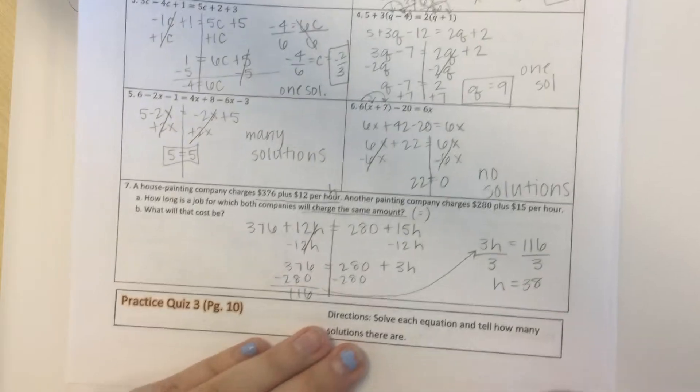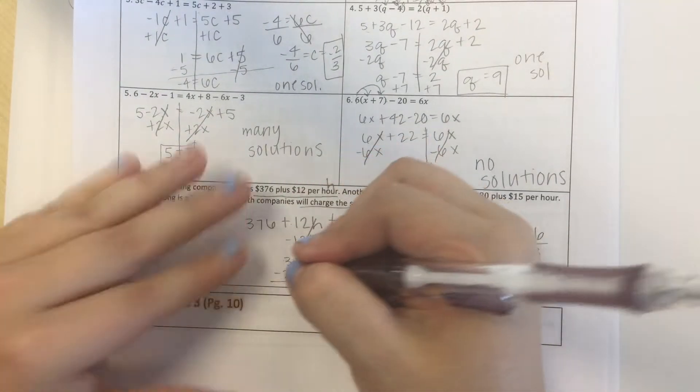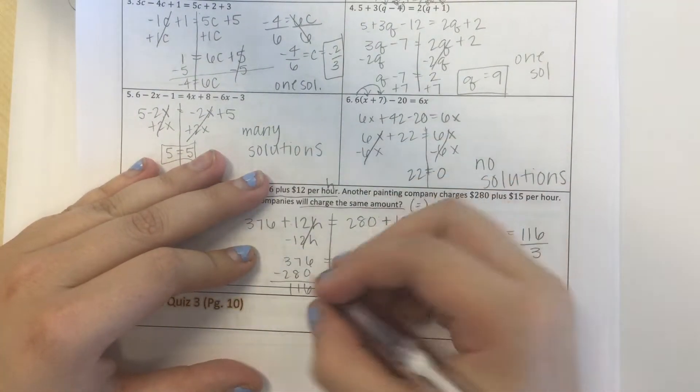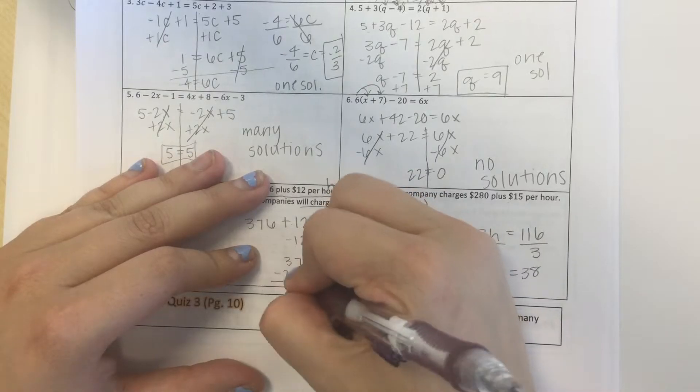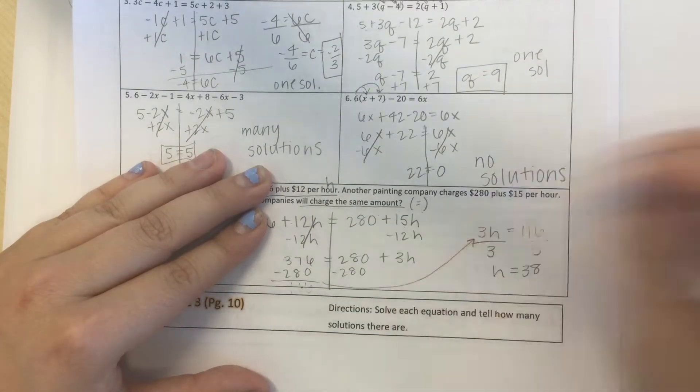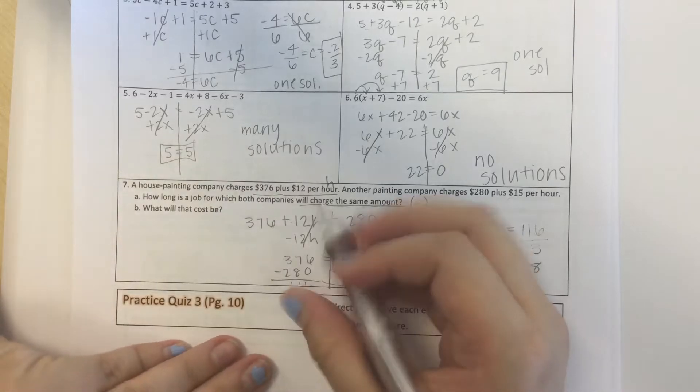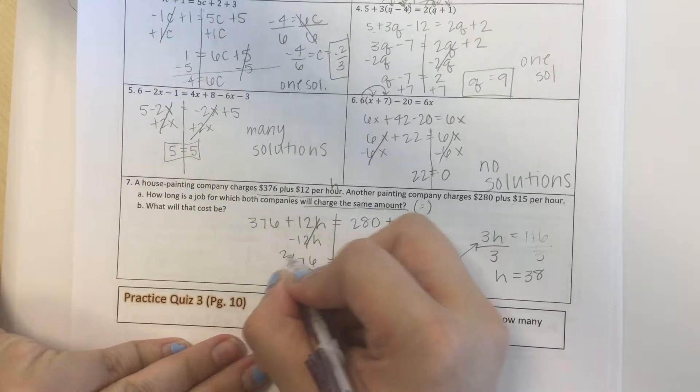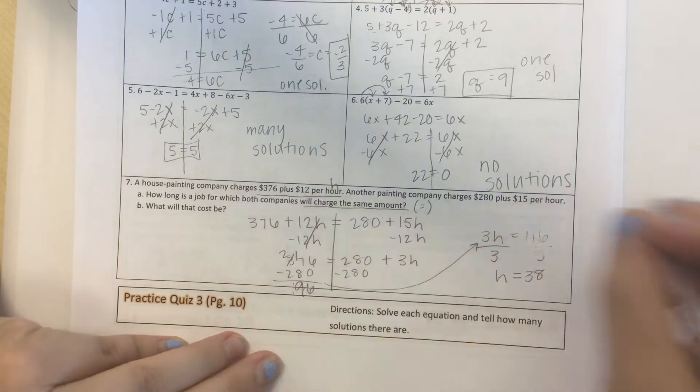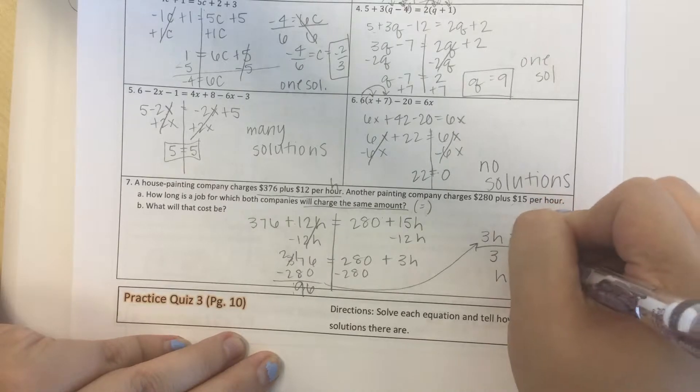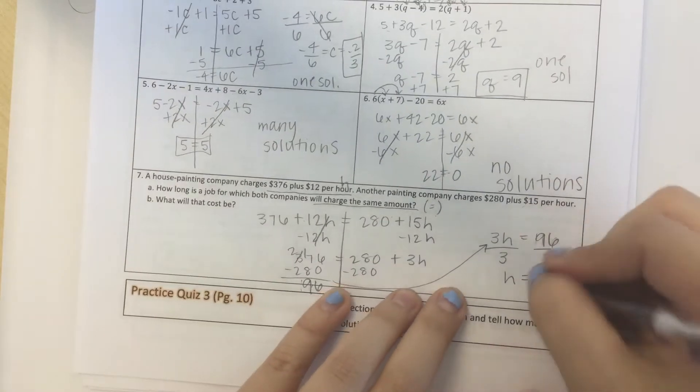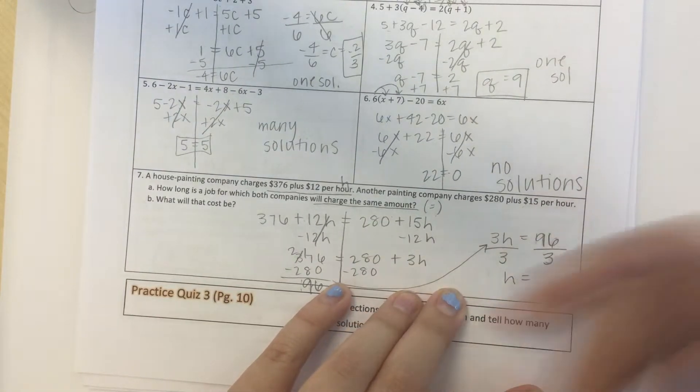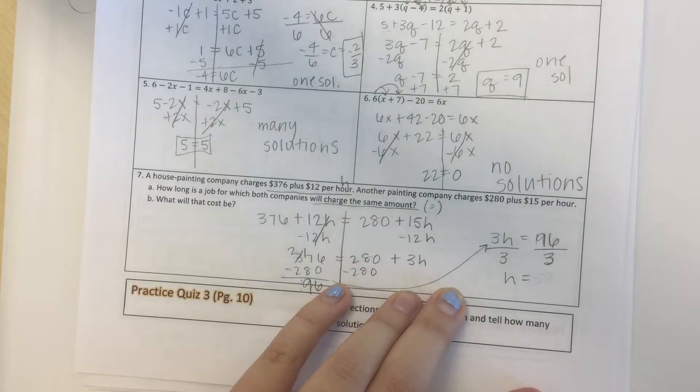Oh I messed up, 7 minus 8 is not 1, my bad everybody makes mistakes. So instead we have 6 minus 0, I have to borrow, 17 minus 8, 96. That makes a lot more sense. 96 divided by 3 is going to be 32 I believe.